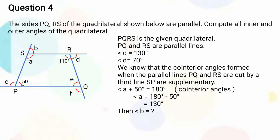What is then angle B? Angle B is equal to 180 degrees minus 130 degrees, since it is a linear pair. It is equal to 50 degrees.